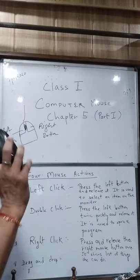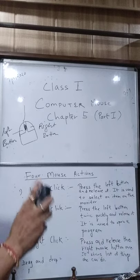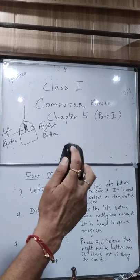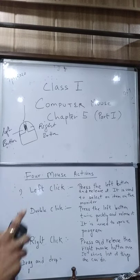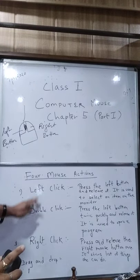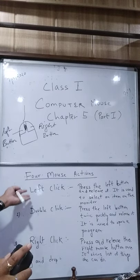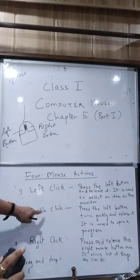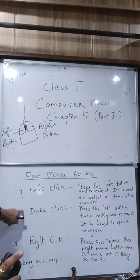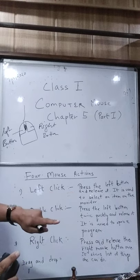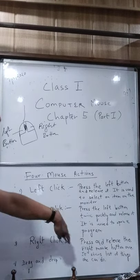The second action is double click. If you press the left button twice quickly and release it, that is called double click. Remember, when I say click, I generally mean left click. When I say double click, it means you have to press the left button twice quickly and release it.